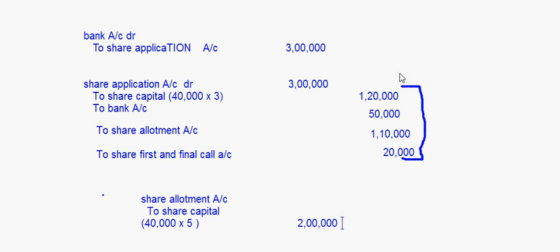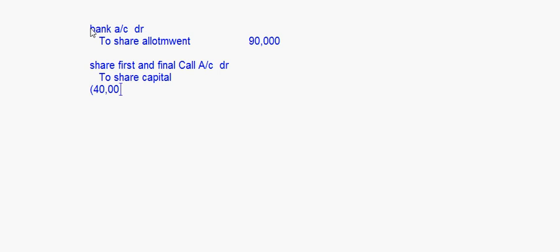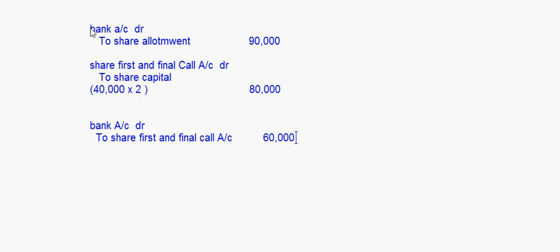The actual amount to be received on allotment is 2 lakh minus 1,10,000 already adjusted, so bank account debit to share allotment will be only 90,000 rupees. Similarly, share first and final call account debit to share capital is 40,000 into 2 rupees equals 80,000. Out of that, 20,000 is already adjusted, so bank debit to share first and final call account is only 60,000.